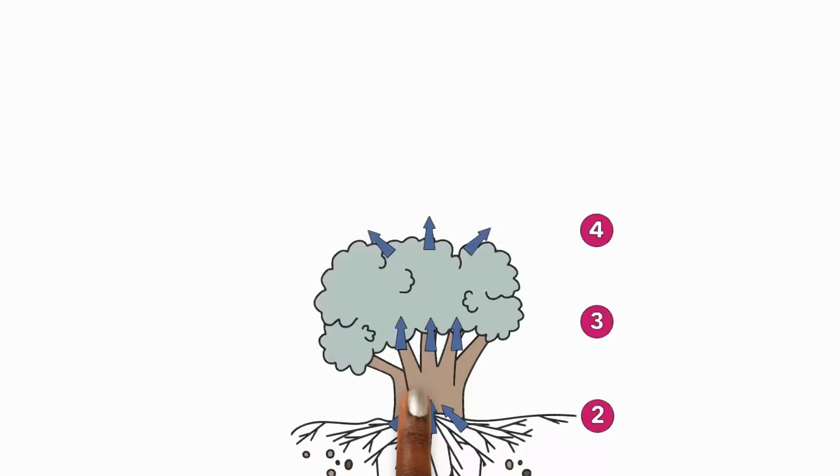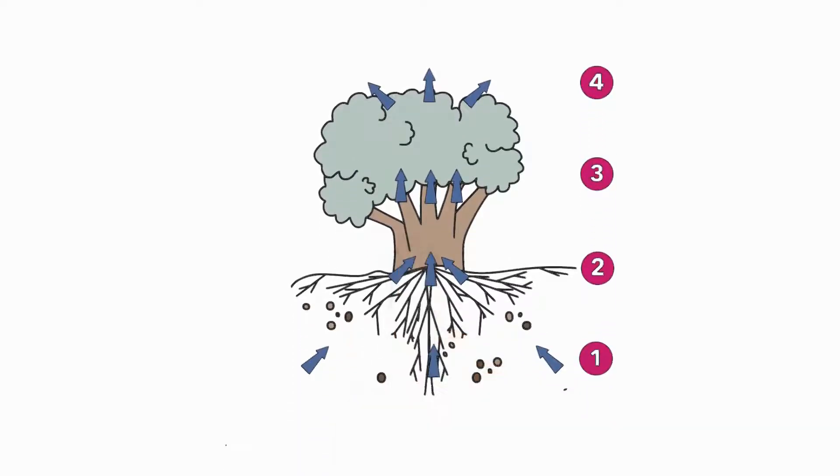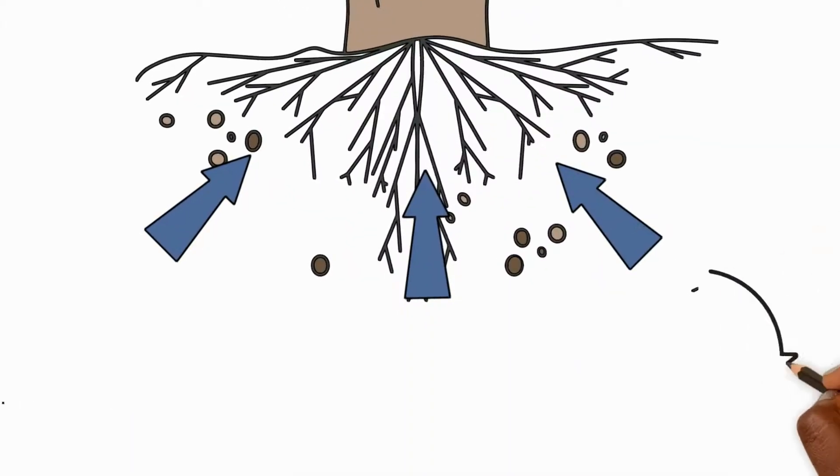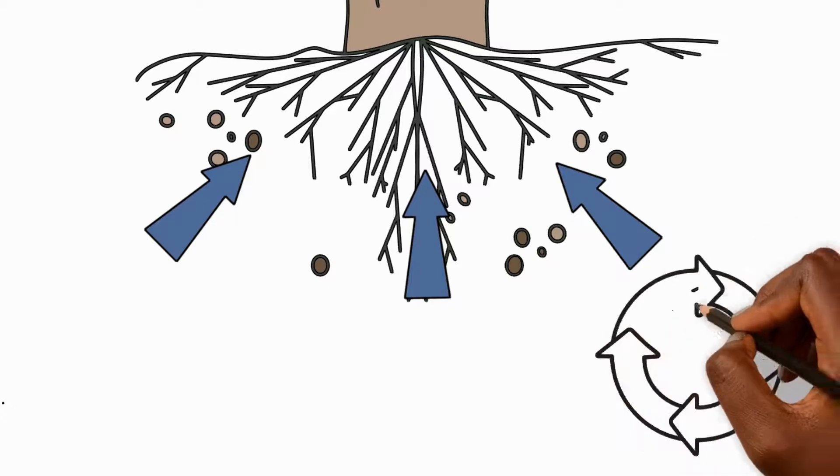Now here's what happens next. The water evaporates from the leaves into the surroundings. This makes room for more water and the roots suck up more from the soil.